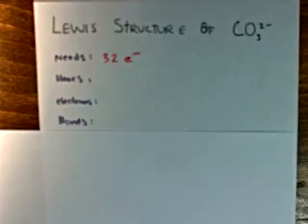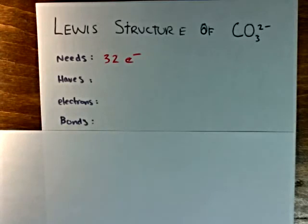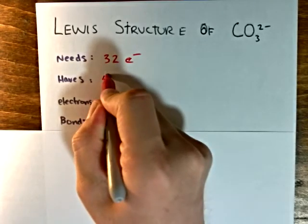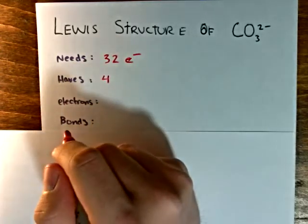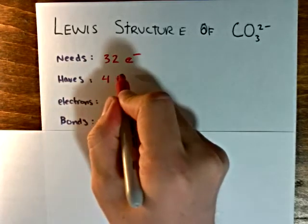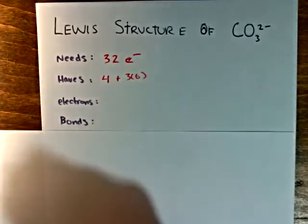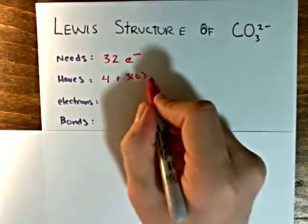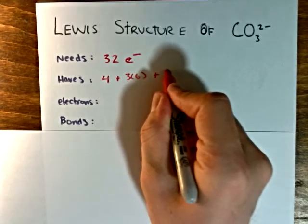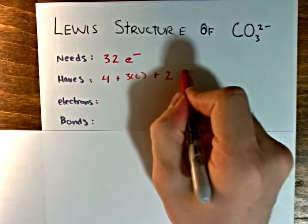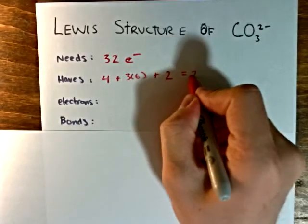The haves represent the number of valence electrons that each atom in the species has in its ground state. Carbon in its ground state has 4, oxygen has 6, and there are 3 of those, plus the 2 additional electrons from the valence electrons that make the species an ion, which gives us a total of 24 electrons.